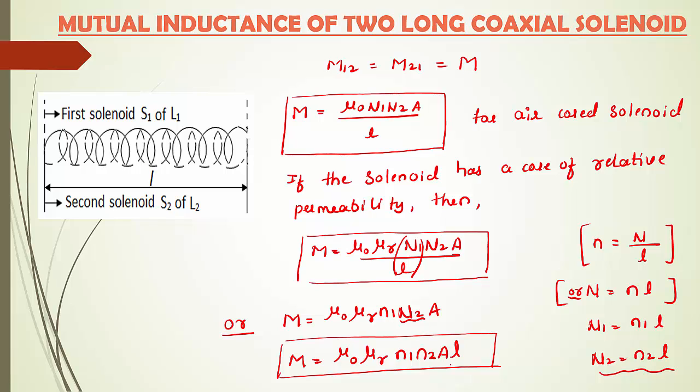This expression for mutual inductance of two long coaxial solenoids carries five marks in the annual examination. This completes the topic of inductors — we have covered both self-induction and mutual induction. The last remaining part of this chapter is the AC generator, which we will study in the next session.